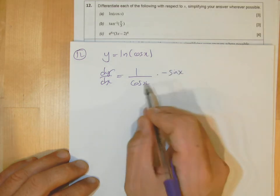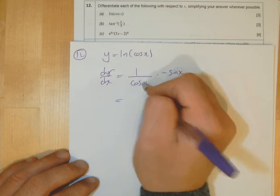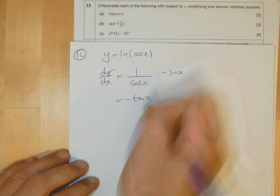And you get sin x on the top, cos x on the bottom. Sin over cos is tan, so it'll be minus tan x because there's a minus there. That's part a.